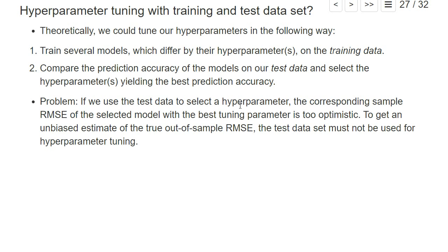Rather, one just applies a tuned model to the test dataset to have a good estimate of the out-of-sample prediction accuracy. Or sometimes one uses a small set of models — for example, one random forest and one neural network — and compares those on the test dataset. But typically, one does not use the test dataset for picking a tuning parameter.